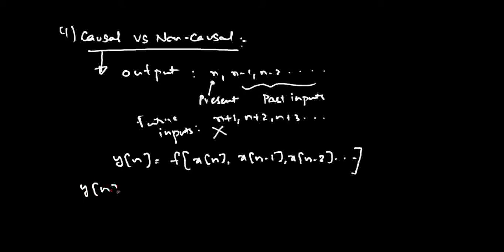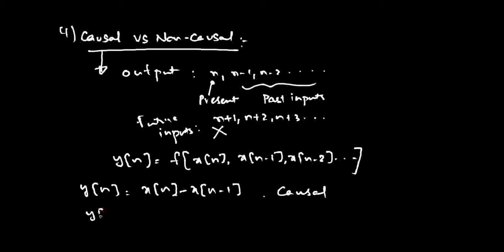For the first example, y of n equals x of n minus x of n minus 1. It is clear that this depends only on the present input x of n and the previous input x of n minus 1, so this is a causal system. For the second example, y of n equals x of n squared. From this equation it is not clear whether n can take positive or negative values, so y of n can depend on future values as well, and hence this is referred to as a non-causal system.